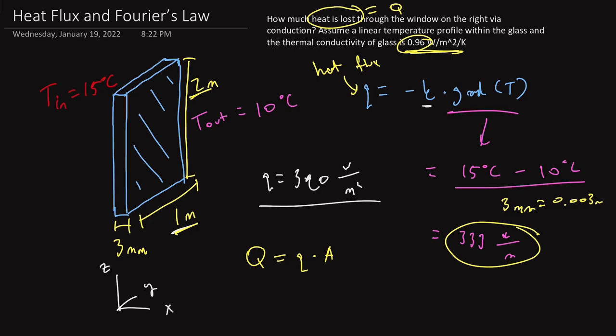And so when we finally calculate what big Q is, we find that in total we've got 320 watts per meter leaving our system, our house. And we're multiplying this by 2 square meters. And so this tells us that we are losing 640 watts in total because of this window in our house.